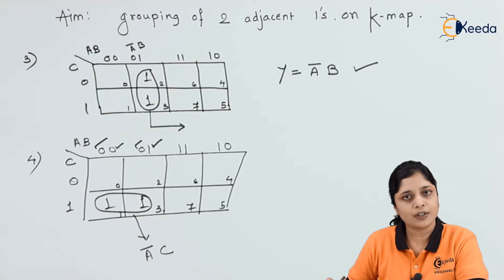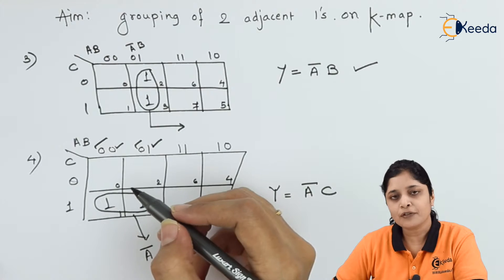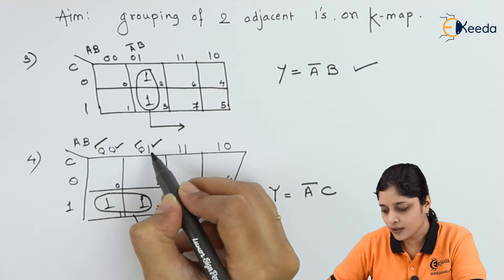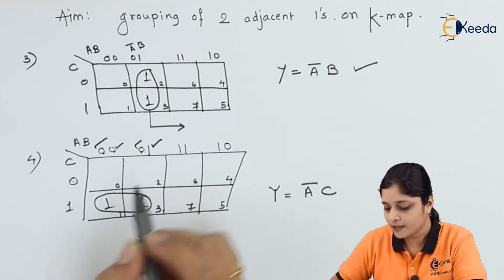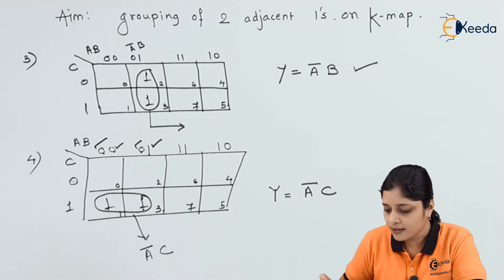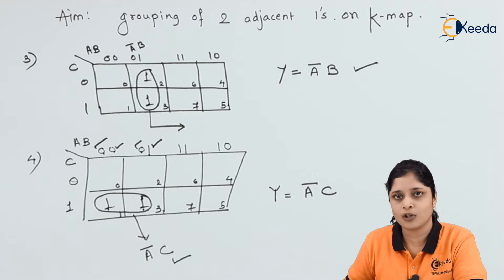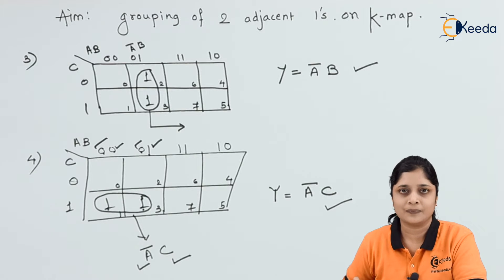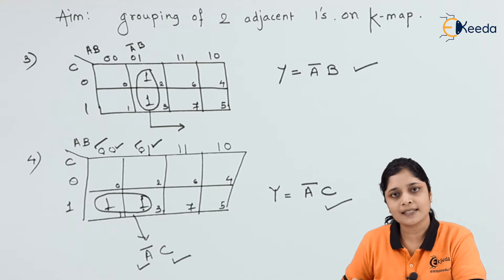For A we write A-bar since it is the same, and C is 1 for both ones, so we write only C. The final equation: A is 0 for both, so we write A-bar; B is changing so we don't consider it; C is 1 for both — logic 1 means no bar. So the final answer is Y equals A-bar·C. That's how you write the answers for grouping of two adjacent ones.